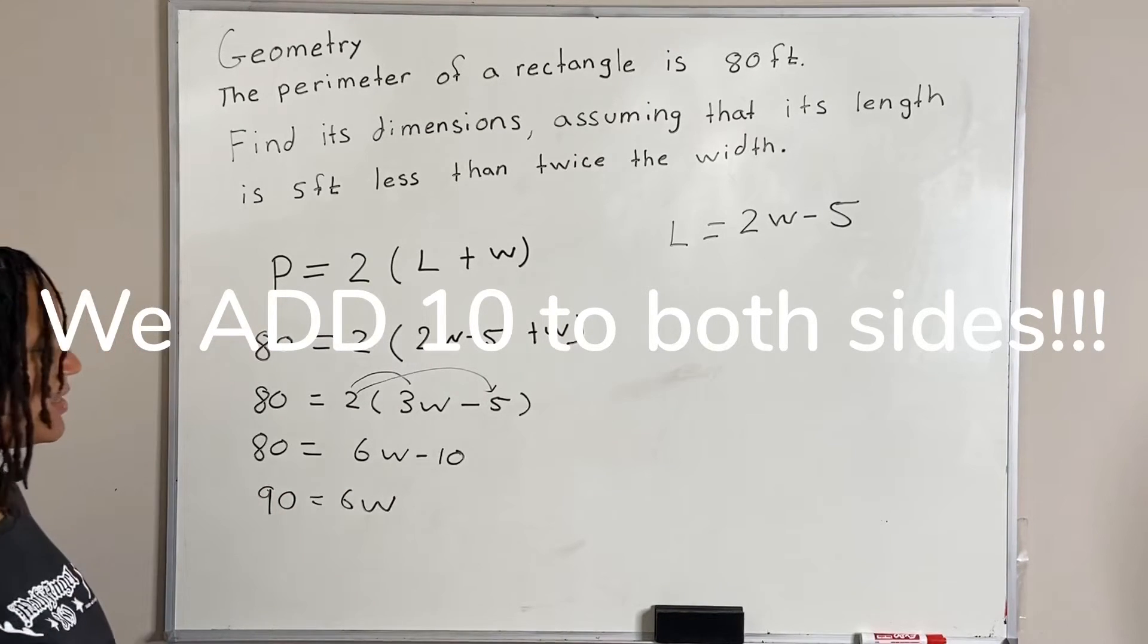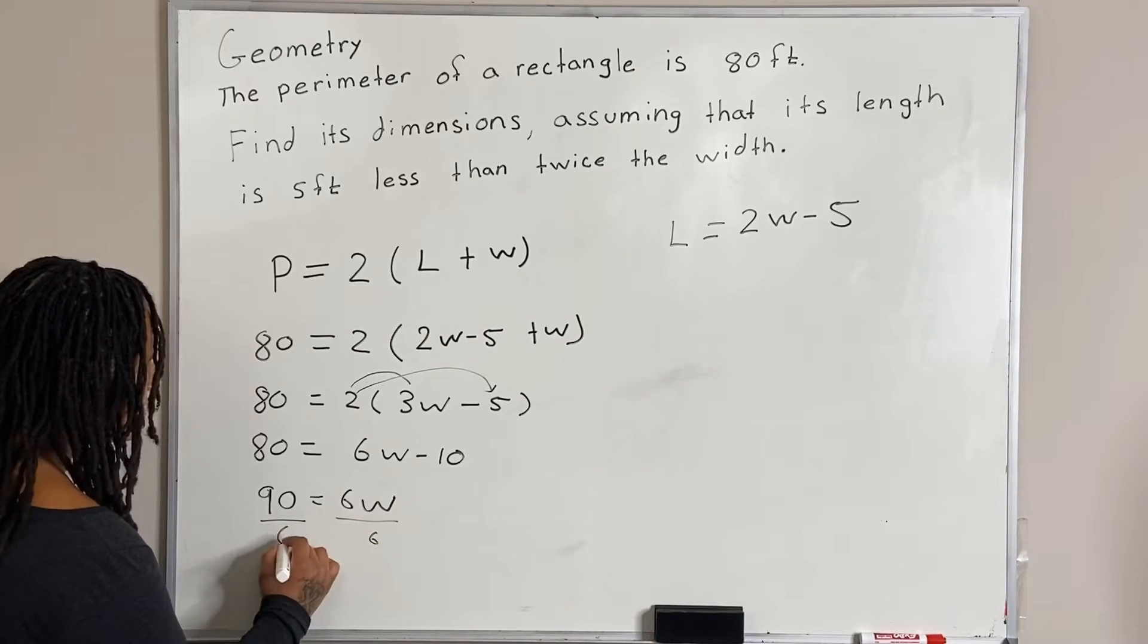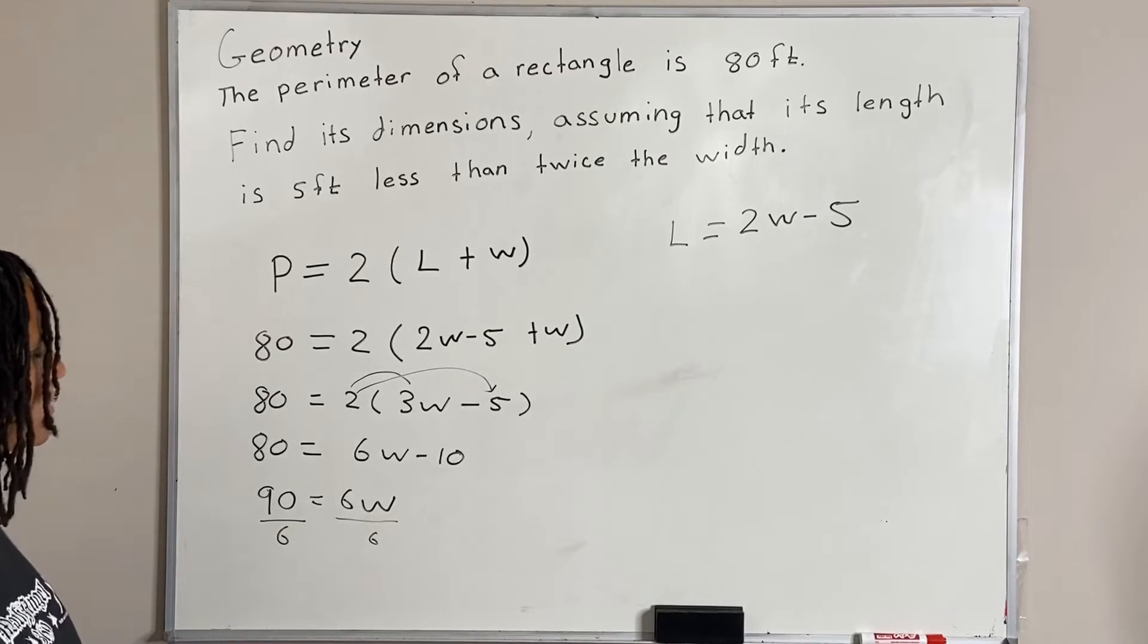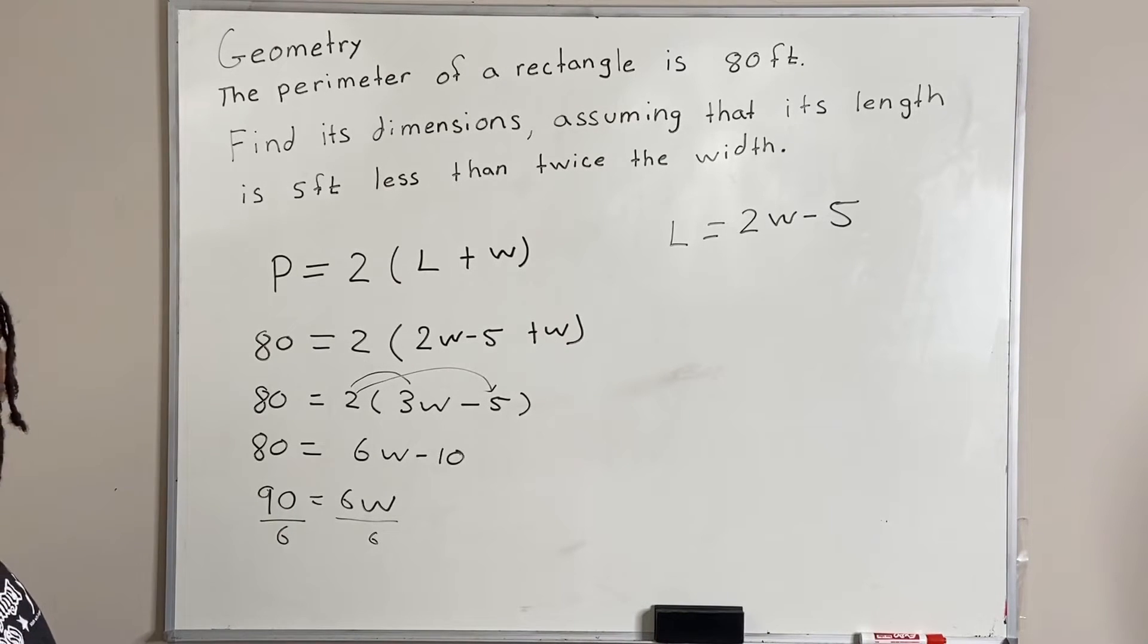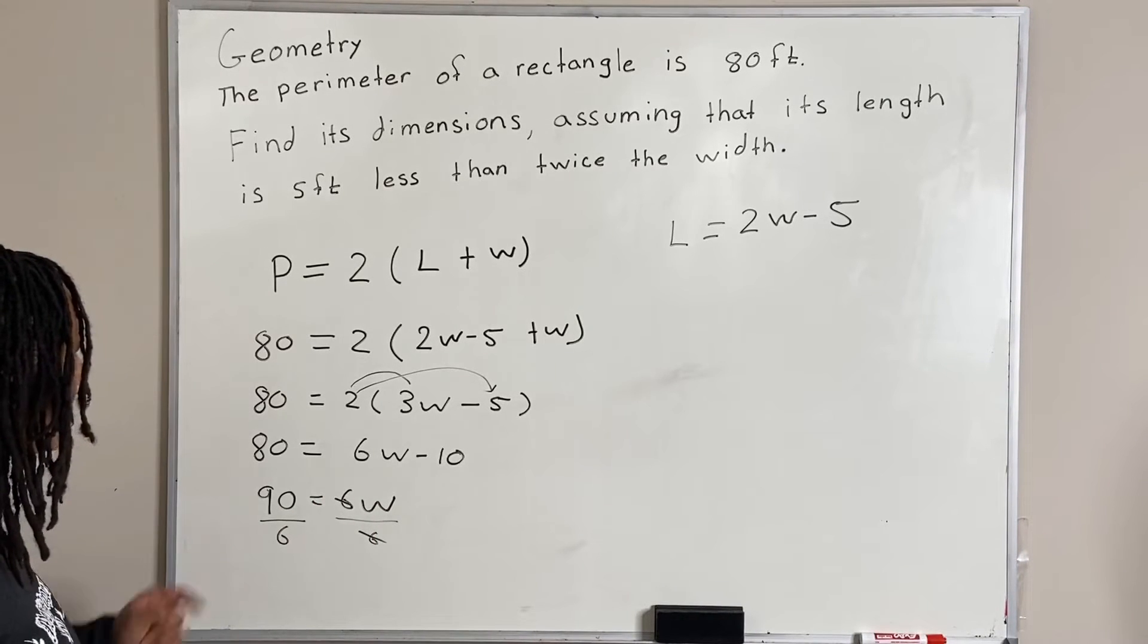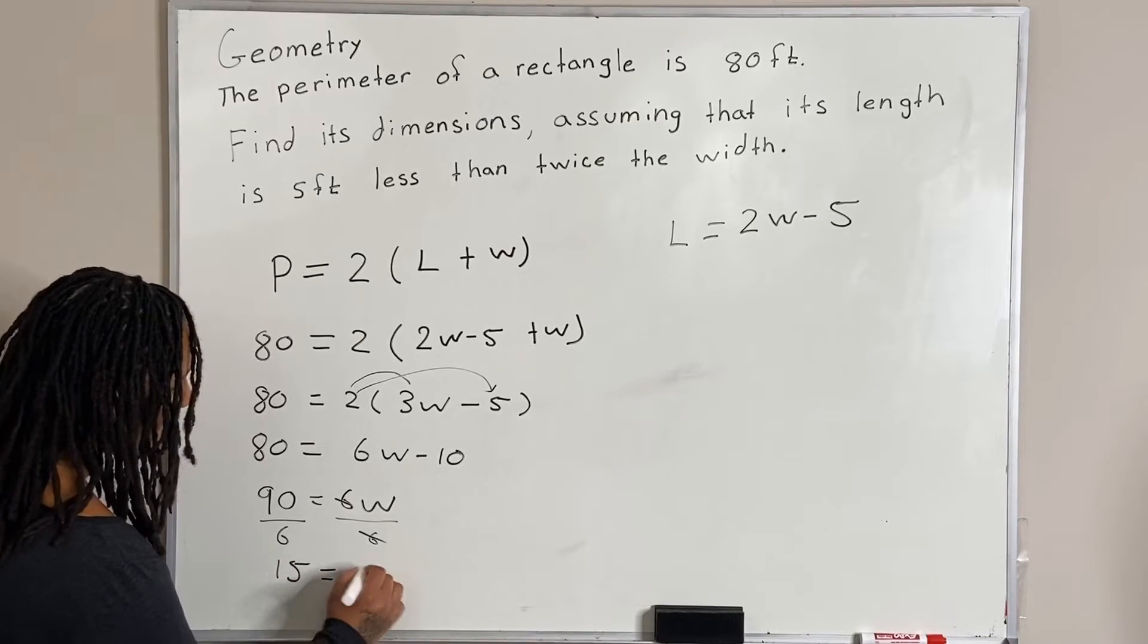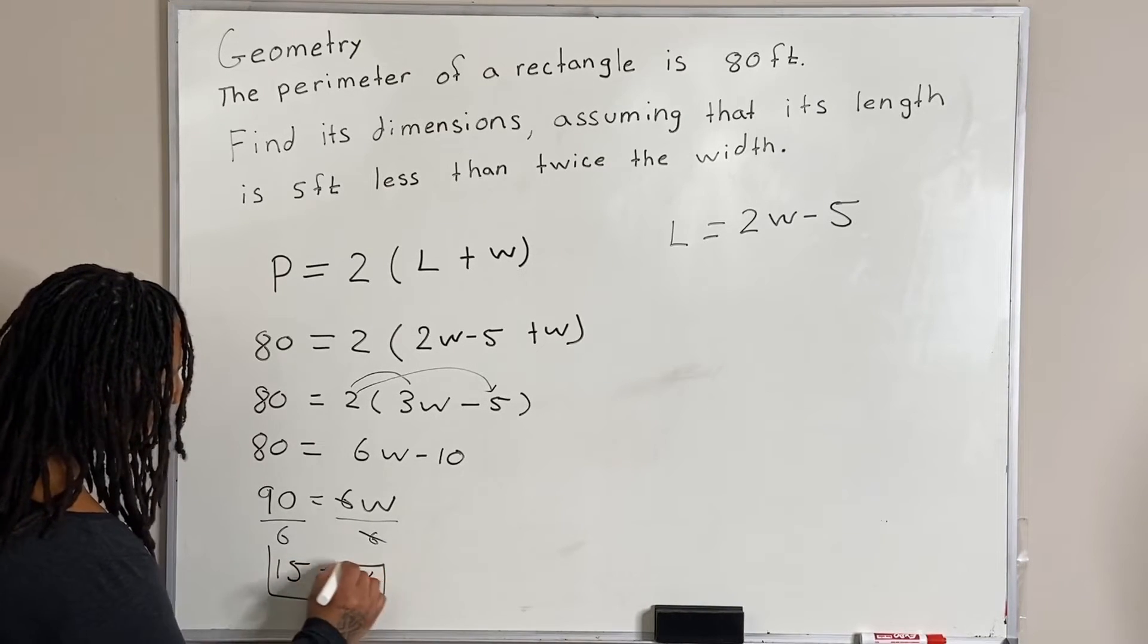And then we are going to divide both sides by 6, and then we solve. So the 6 cancels, and 90 divided by 6 is 15. So our width is 15.